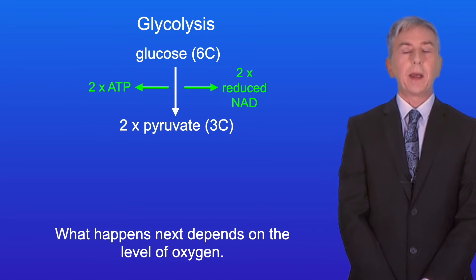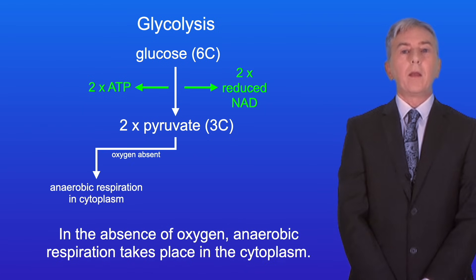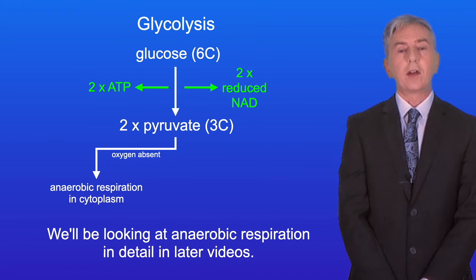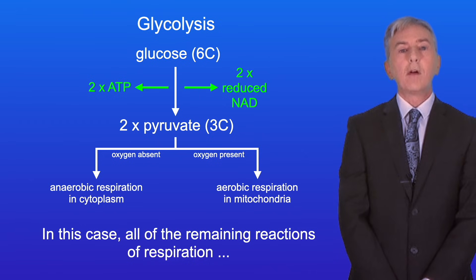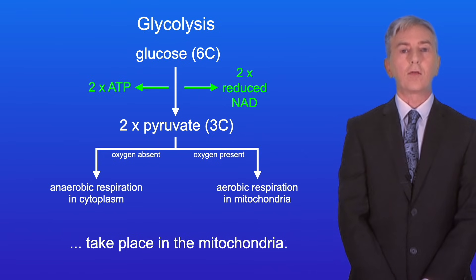Now what happens next depends on the level of oxygen. In the absence of oxygen anaerobic respiration takes place in the cytoplasm, and we'll be looking at anaerobic respiration in detail in later videos. However, if oxygen is present then the cell carries out aerobic respiration, and in this case all of the remaining reactions of respiration take place in the mitochondria.